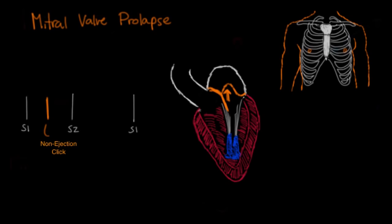This click is also not right at the beginning of systole — it's actually a mid to late systolic click. As the left ventricle begins to contract, the mitral valve closes normally to cause S1. Then as pressure builds, this valve accelerates into the left atrium. When it stops abruptly, held by the chordae tendinae, there's a rapid tensing of either the chordae or that leaflet, and that causes this little click.